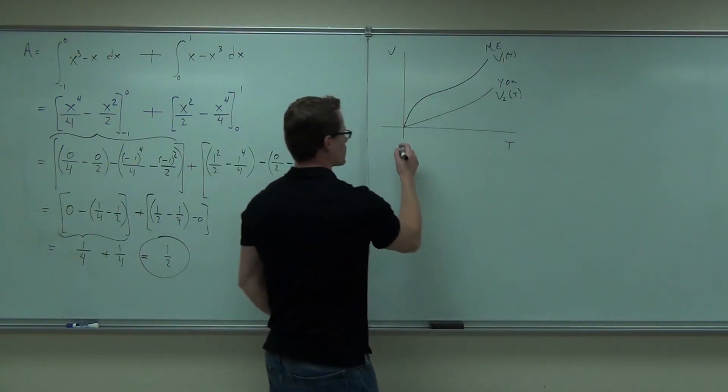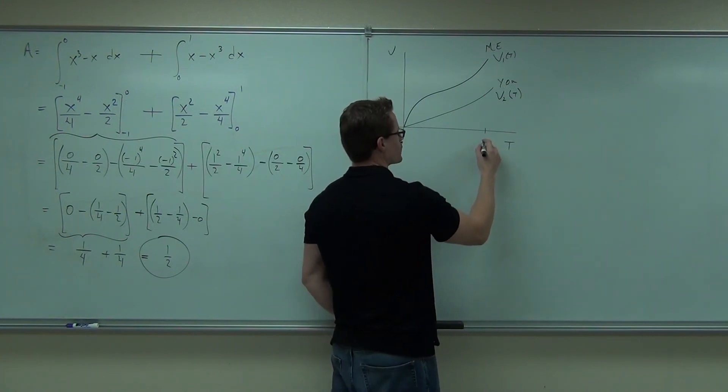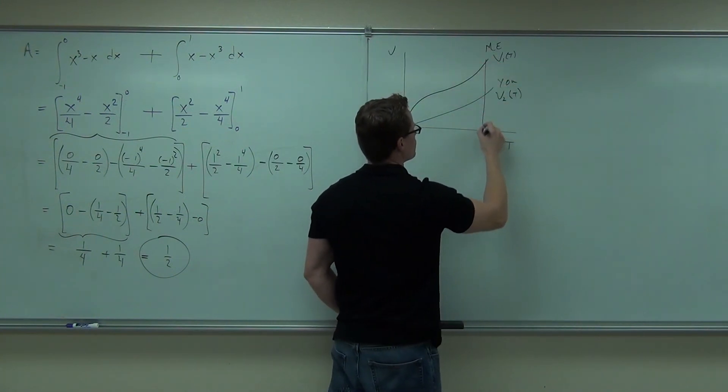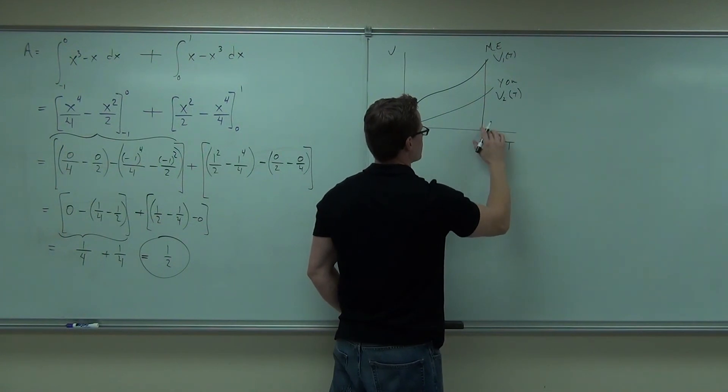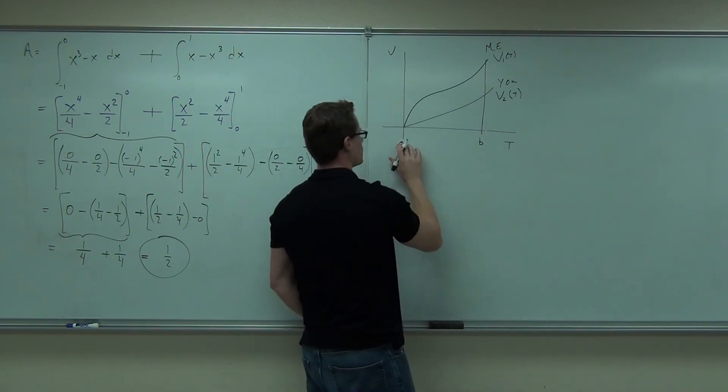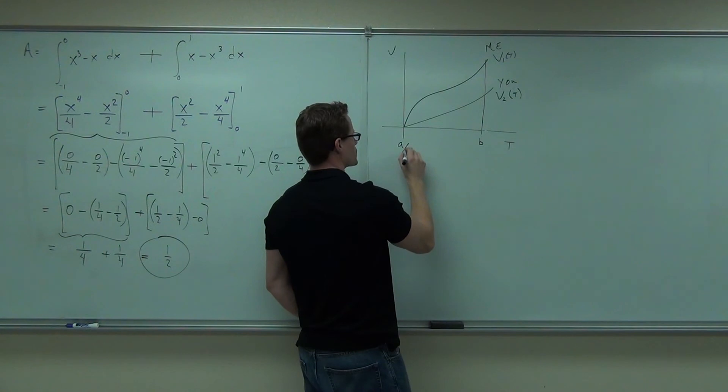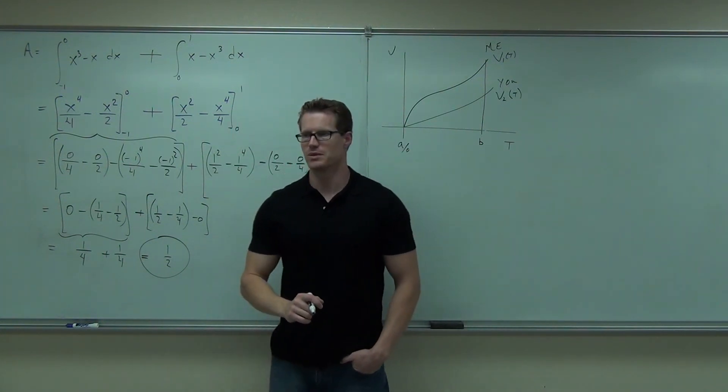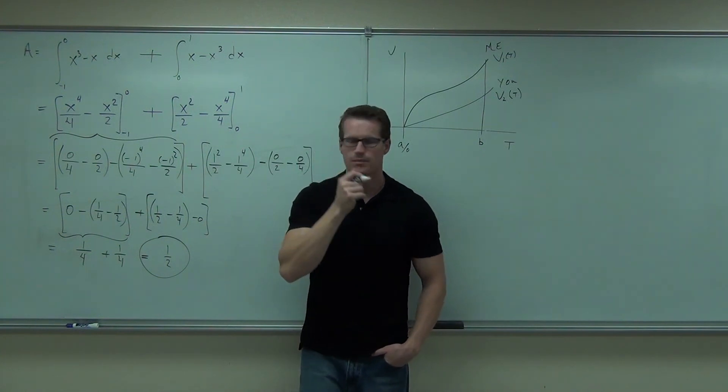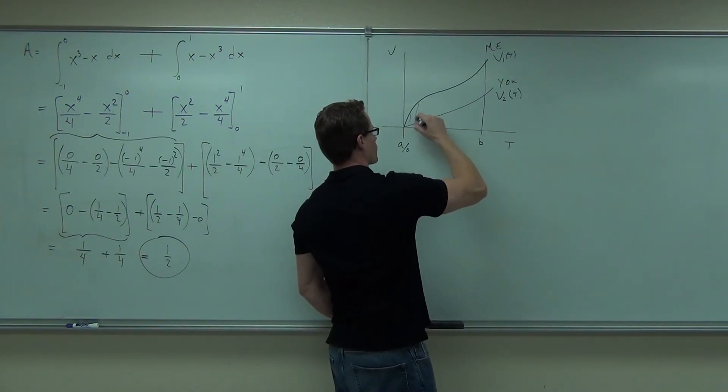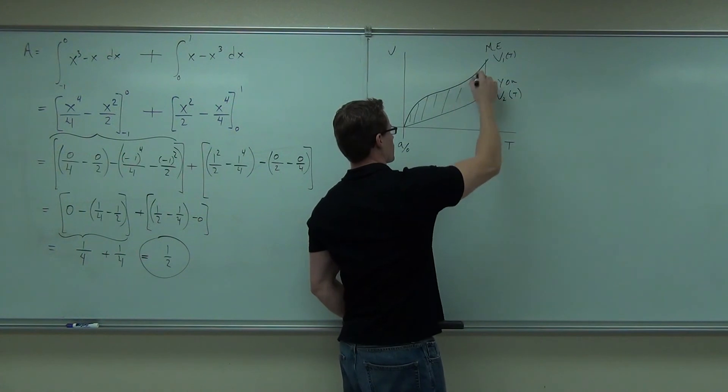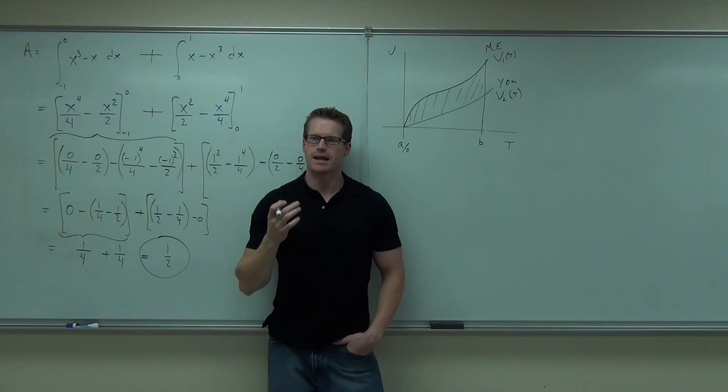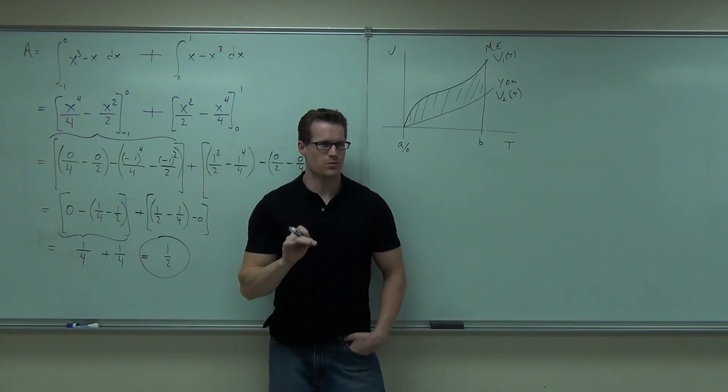My question is, between here where we start and here where the race is over, A or zero, and B where the race is over, do we have any area between the curves? Yeah.